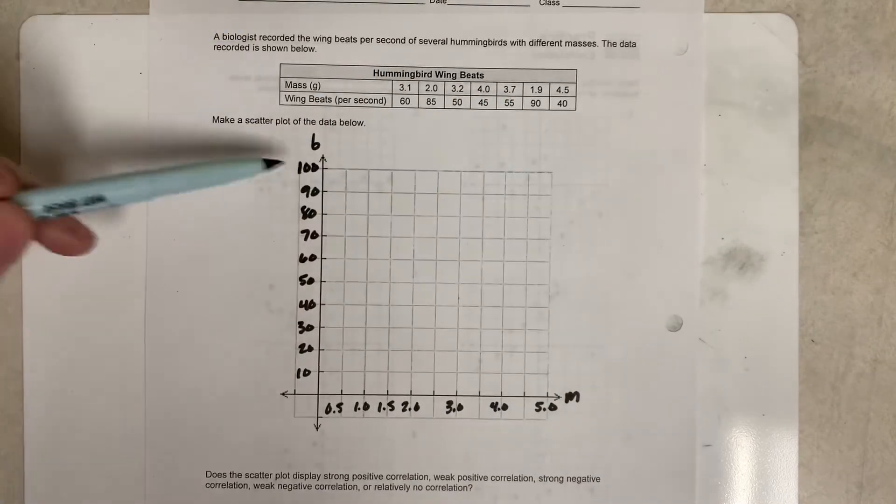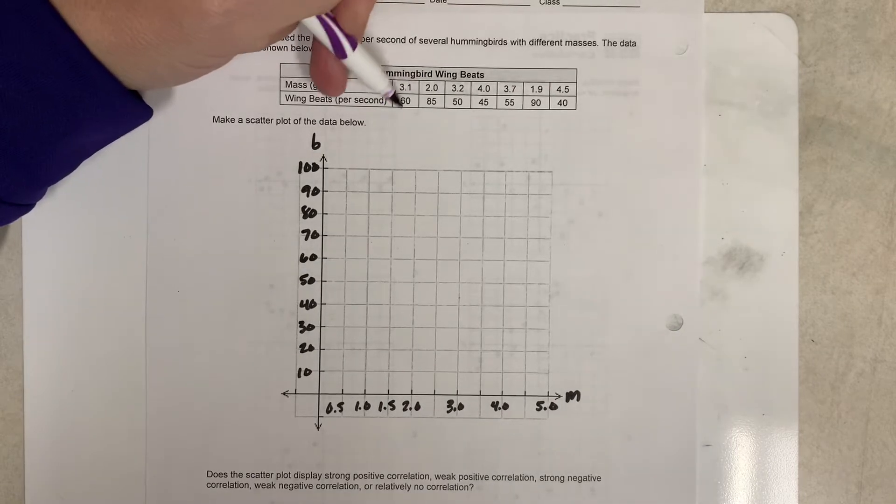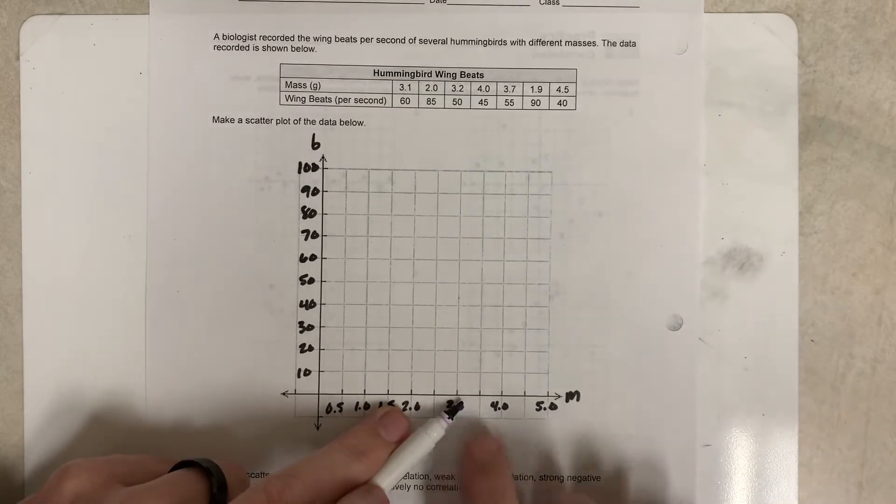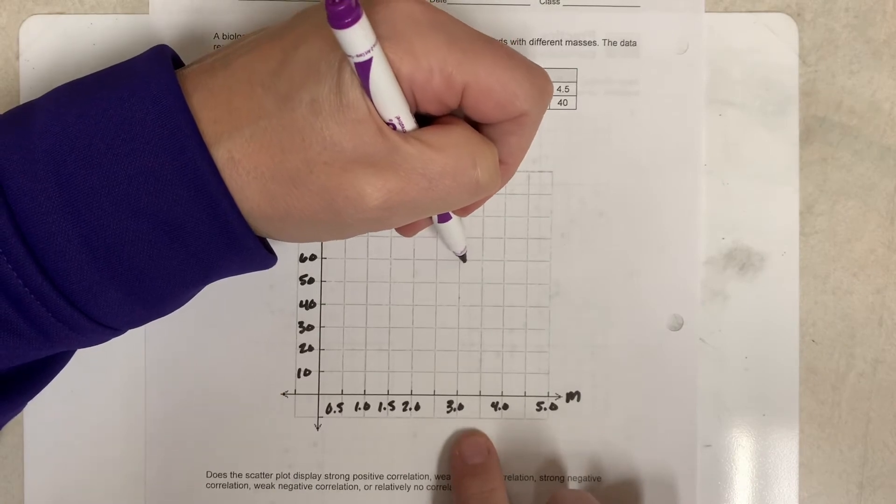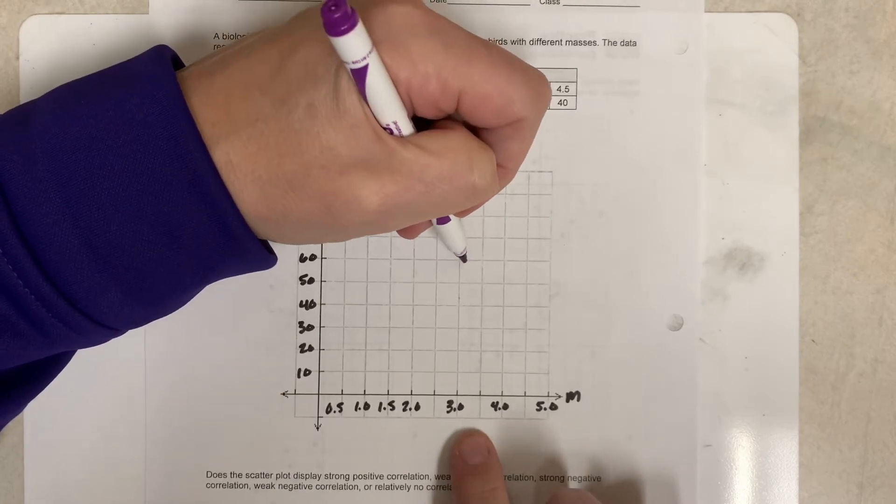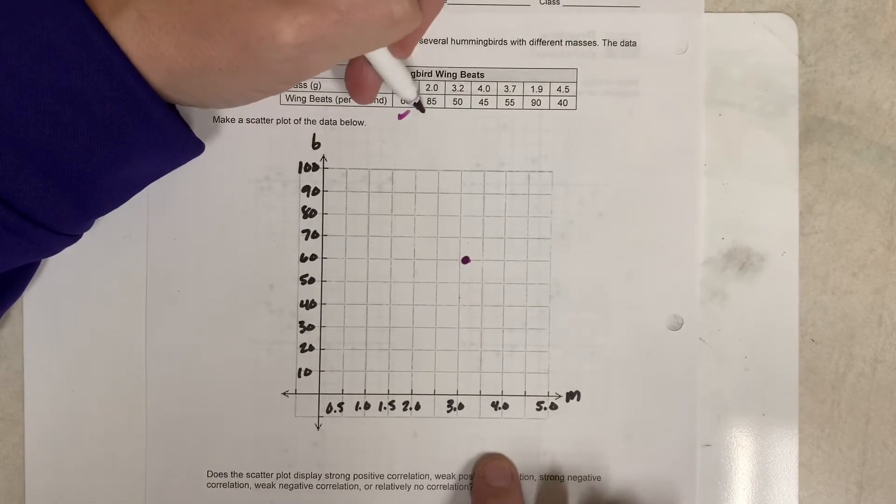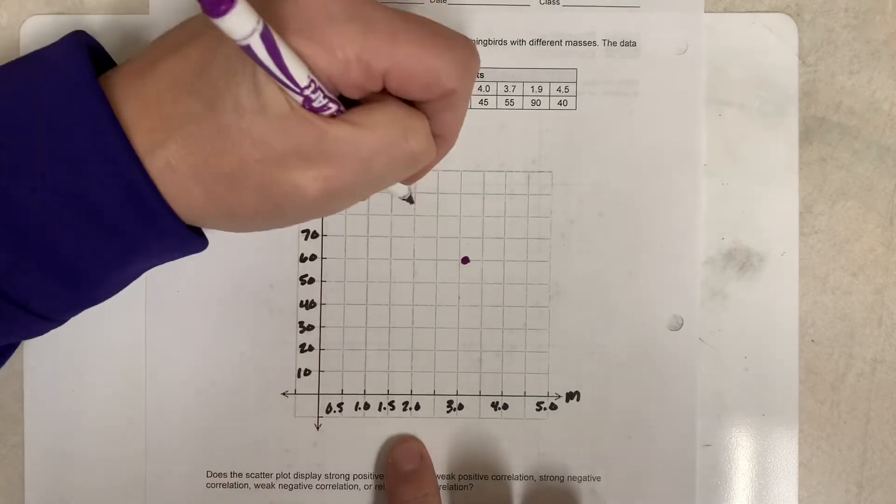All right, so let's take this marker here. So let's do 3.1, 60. So 3.1 would be maybe a little bit after three, and then 60 would be about right here, so we can probably put that one about right there. Okay, so that's this one. 2.0, 85. So 2.0, 85 would be right in the middle, right here.